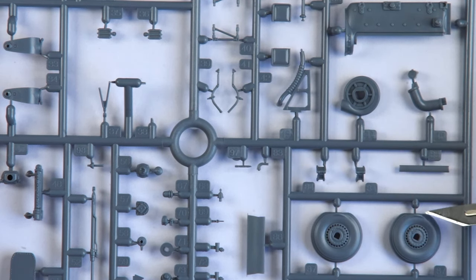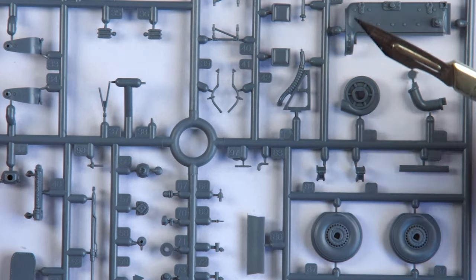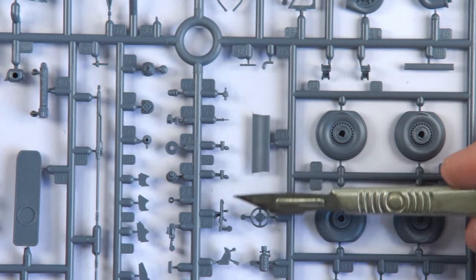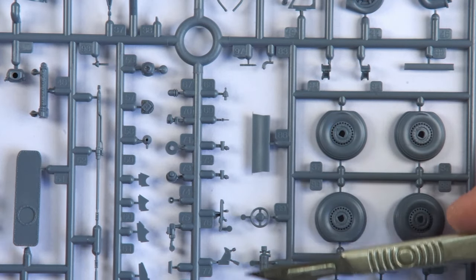These are the very nice flattened wheels, with good hub detail. Here you can see some of the wheels, as well as a host of more finely cast fiddly bits.